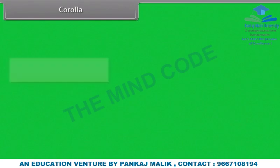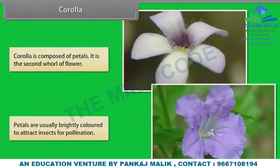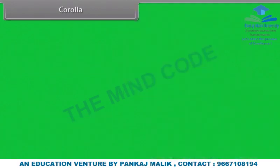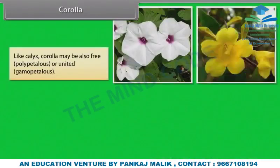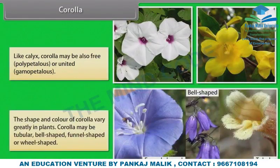Corolla is composed of petals. It is the second whorl of flower. Petals are usually brightly colored to attract insects for pollination. Like calyx, corolla may also be free (polypetalous) or united (gamopetalous). The shape and color of corolla vary greatly in plants. Corolla may be tubular, bell-shaped, funnel-shaped or wheel-shaped.